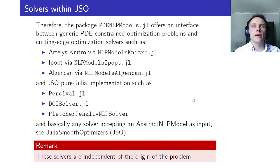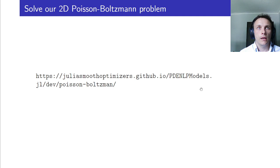That's the beauty of it. The package PDENLPModels.jl offers an interface between generic PDE-constrained optimization problems and cutting-edge optimization solvers, as the solvers are independent of the origin of the model. You can use any solvers that take an abstract NLP model as input. As I mentioned before, we have wrappers to existing solvers such as KNITRO, Ipopt, and ALGENCAN. You can also use pure Julia implementations. To mention three of them: Percival, DCISolver, and the newborn FletcherPenaltyNLPSolver. Or basically, any solver that takes an abstract NLP model as input.